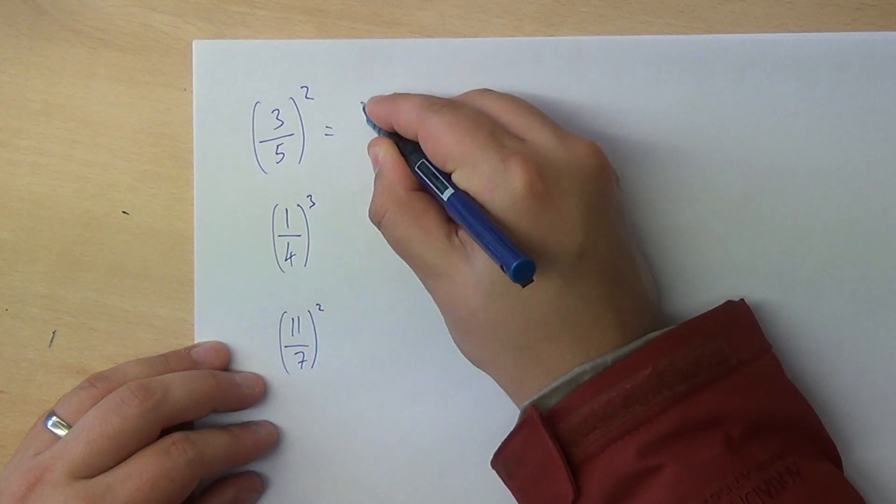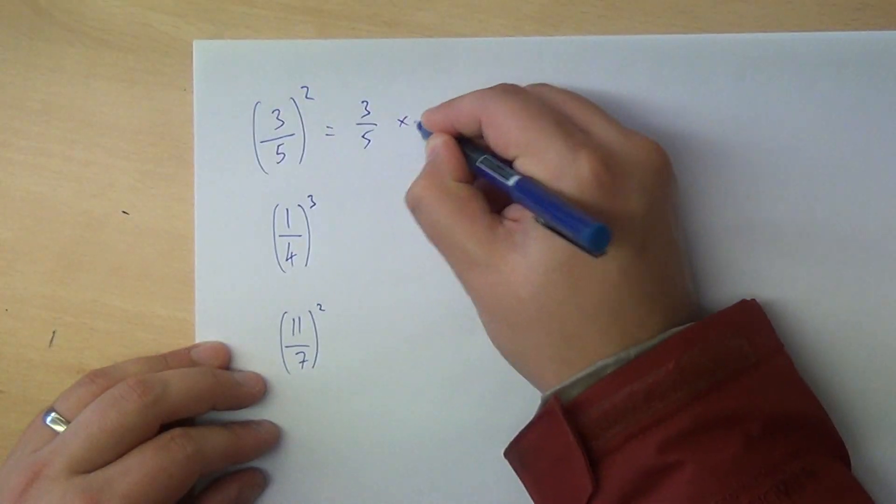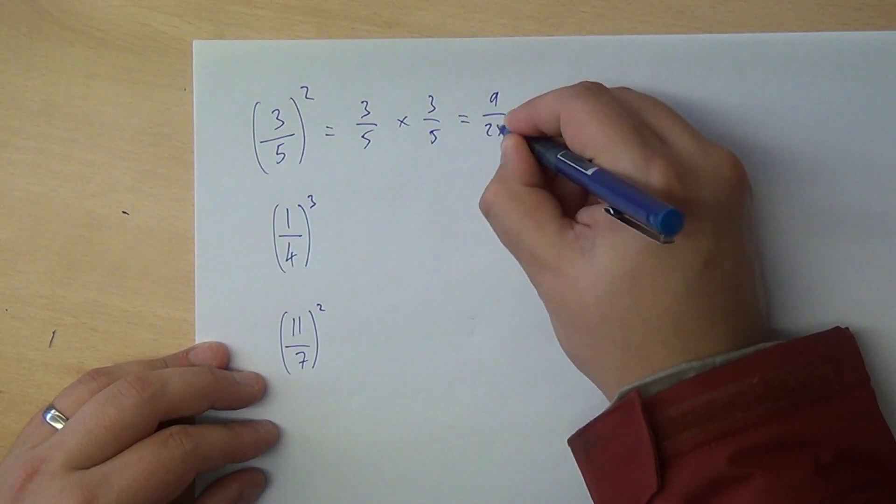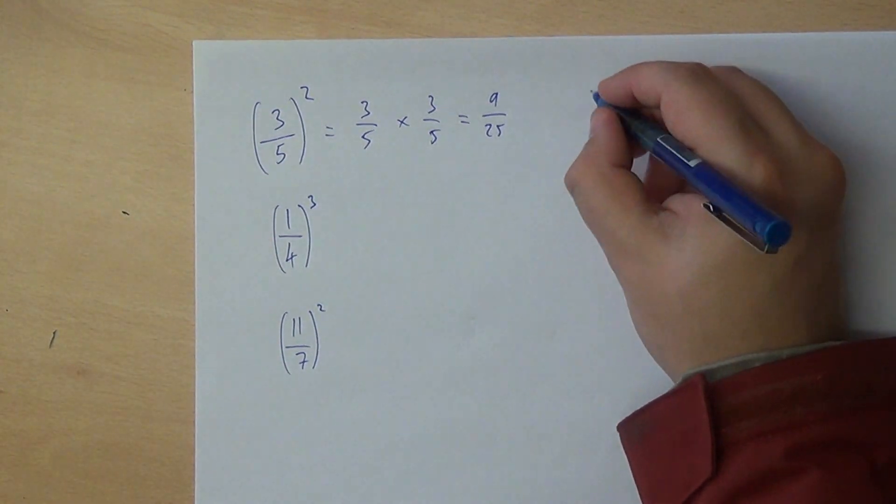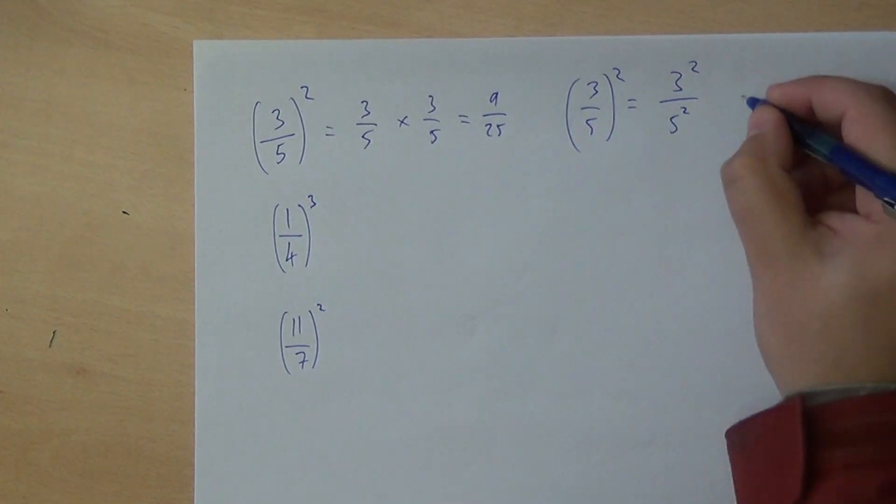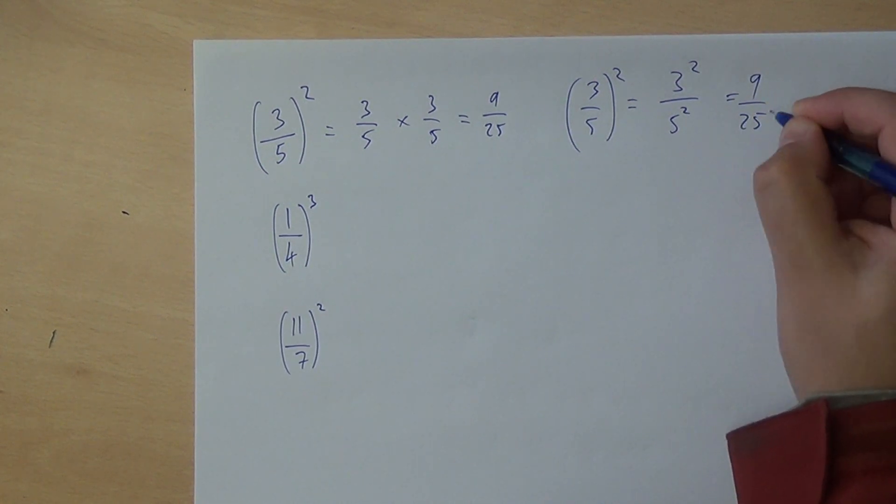As you know, squared means times by itself. So this is 3 fifths multiplied by 3 fifths. And if you know your fractions, that's 9 twenty-fifths. We can do this quicker because it's actually just 3 squared over 5 squared, which is 9 twenty-fifths.